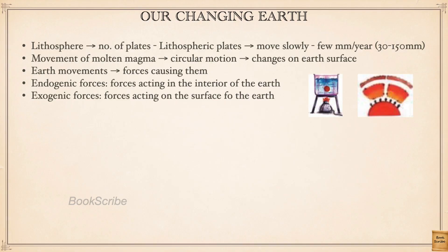We have already seen about the lithosphere of our earth. It is the outermost layer of earth which contains the earth's crust. The lithosphere contains a number of plates called lithospheric plates. To understand the lithosphere, we can take a rubber ball or a coconut as an example — both have a shell or rubber layer on the outer part, just like the lithosphere is the outermost part of our earth.